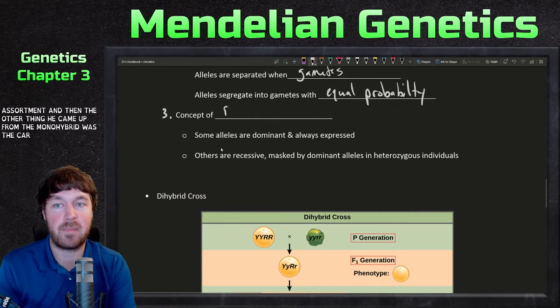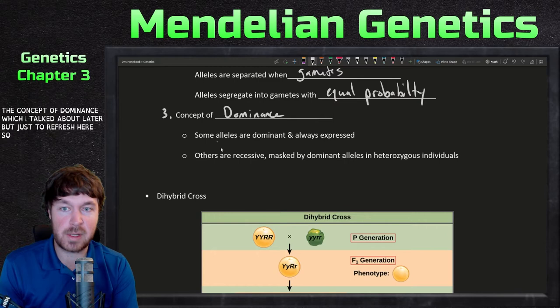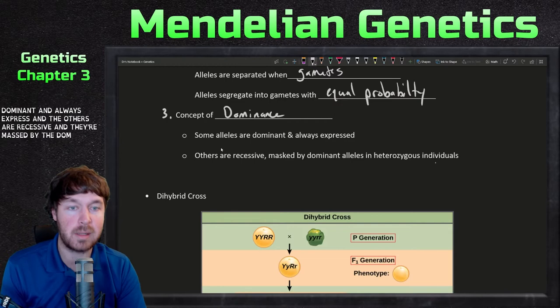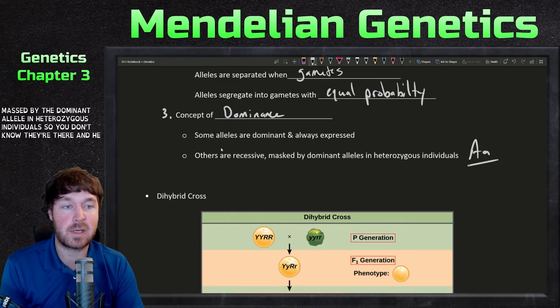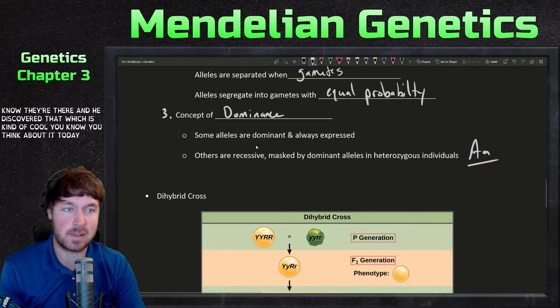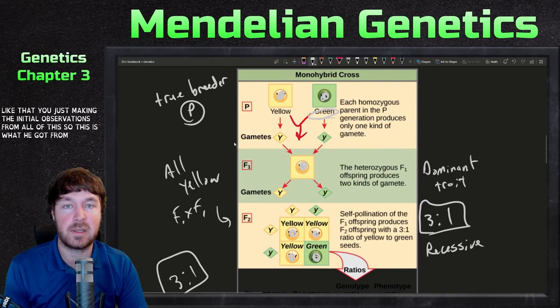The other thing he came up with from the monohybrid was the concept of dominance. Some alleles are dominant and always expressed, and the others are recessive — they're masked by the dominant alleles in heterozygous individuals, so you don't know they're there. He discovered that, which is kind of cool. He's just making the initial observations from all of this, nothing about enzymes or anything like that.